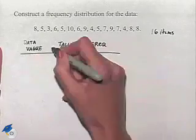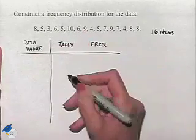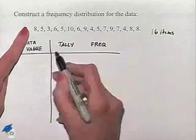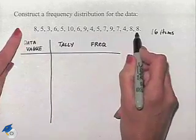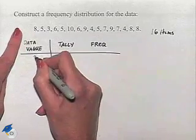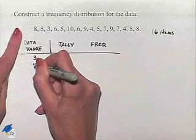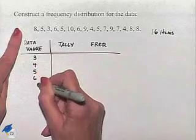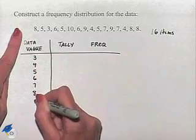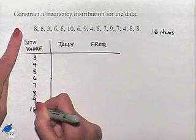So we're going to have a data value, and if we list them in numerical order, we notice that the smallest value we have in this list is 3. And then we have 4, 5, 6, 7, 8, 9, and the largest value is 10.